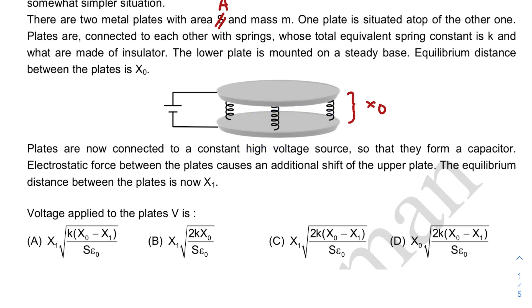Electrostatic force between the plates causes an additional shift of the upper plate towards the downward, of course, because this lower plate will pull it in the downward direction. The equilibrium distance between the plates is now x1. So whenever you are applying a voltage V, the plate shifts a little bit downward. Now the steady distance between the two plates is x1.